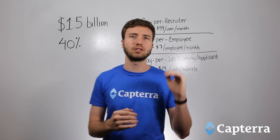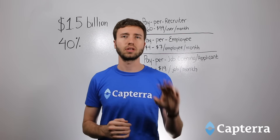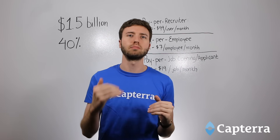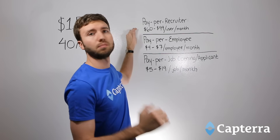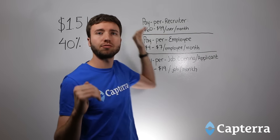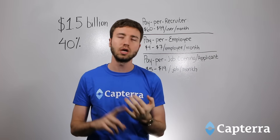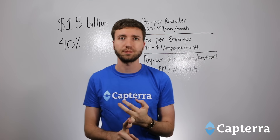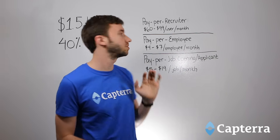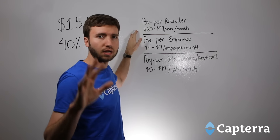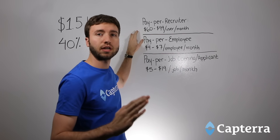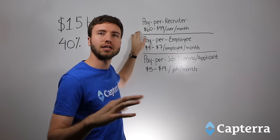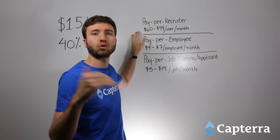ATS pricing breaks down into three different models. The first, and by far the most common, is going to be a pay-per-recruiter model. What that means is you're paying for every full-time recruiter or hiring manager that you have accessing and using the system. These numbers are ranges and will vary quite a bit across vendors, but roughly you can expect to pay about $60 to $99 per month per recruiter.